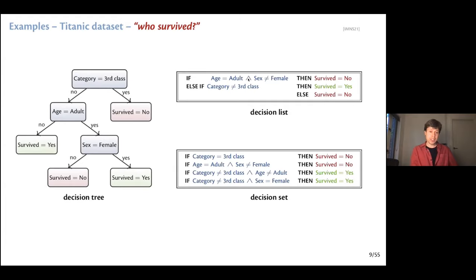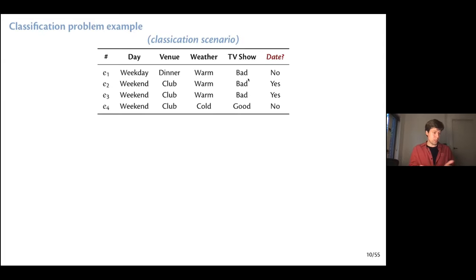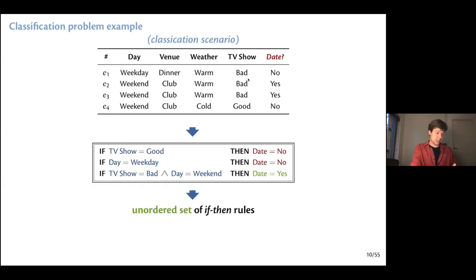I'll focus on decision sets. We consider the standard scenario of classification — a dataset that is a list of instances, each with attributes/features and a corresponding prediction. Our task is to learn a model that respects the training data and generalizes to unseen data. A decision set is an unordered set of rules, in contrast to a decision list where order matters. Here we don't care about order — we can apply any rule that fires for a prediction. Say we have an instance E1, we check which rule fires, there can be multiple, we pick any, and that's our prediction.